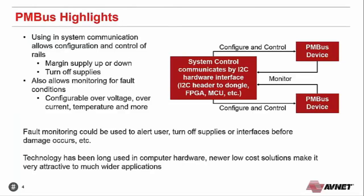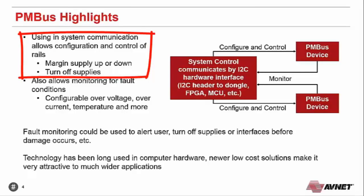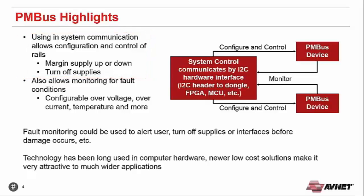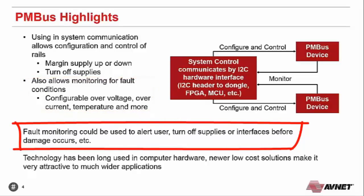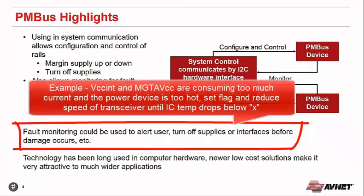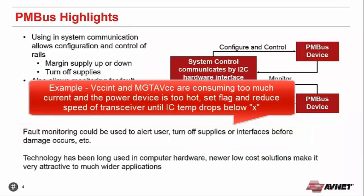Some highlights of the PMBus: using in-system communication allows you to configure and control your rails. You can margin supplies up or down, turn supplies on or off, and monitor for fault conditions. From the system controller you can create different actions based on certain fault conditions — configuring overvoltage, overcurrent, and temperature thresholds — and then design your system to turn things off or take action based on that information to gain more control of your system.